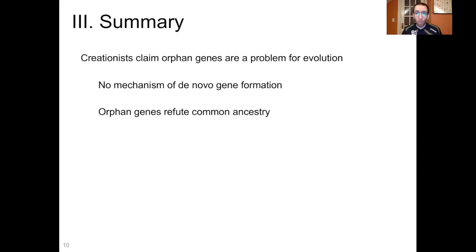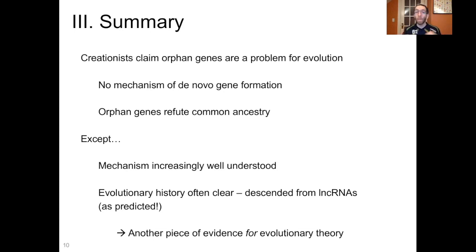To summarize: creationists claim orphan genes are a problem for evolutionary theory. They claim there's no mechanism for de novo gene formation, and that orphan genes refute common ancestry. Except the mechanism is increasingly well understood, and the evolutionary history of these orphan genes is often very clear. They're descended from long non-coding RNAs as predicted once we figured out the mechanism. So not only do orphan genes not refute evolutionary theory, they are another extremely strong piece of evidence for evolutionary theory.